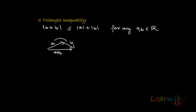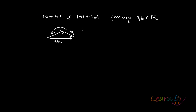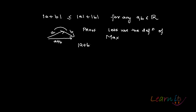Now we will try to prove it mathematically using our knowledge of real numbers. Let's use the definition of max here. Max can be defined like this: the absolute value of A plus B is equal to max of the positive and negative — so max of (A plus B) and (minus A minus B). That's the definition of max.